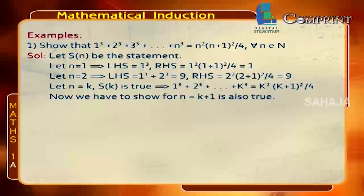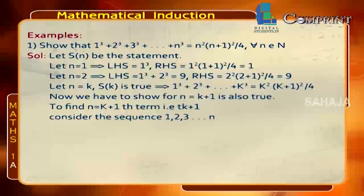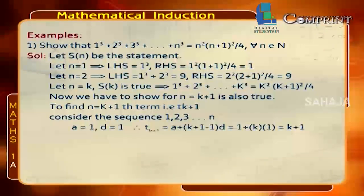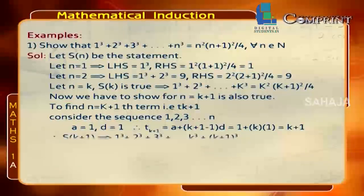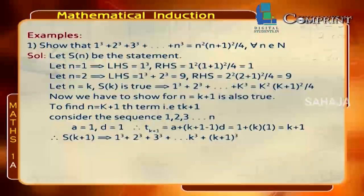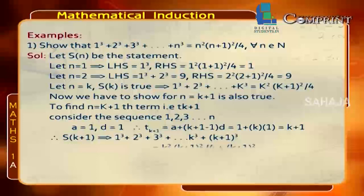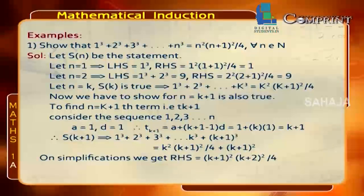We need to show S(k+1) is true. The (k+1)th term in the sequence 1, 2, 3, … with a = 1 and d = 1 is d(k+1) = k+1. Adding (k+1)³ to both sides: 1³ + 2³ + … + k³ + (k+1)³ = k²(k+1)²/4 + (k+1)². On simplification, RHS equals (k+1)²(k+2)²/4.